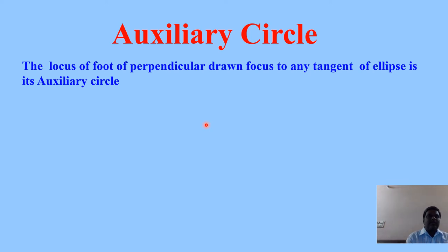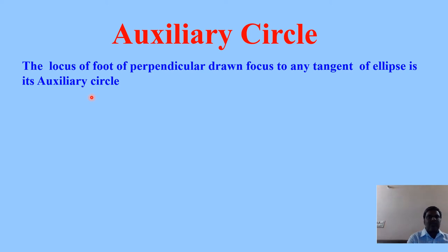The property states that the locus of the foot of perpendicular drawn from the focus to any tangent of the ellipse is its auxiliary circle. We have to show that this locus is the auxiliary circle. How to prove this?